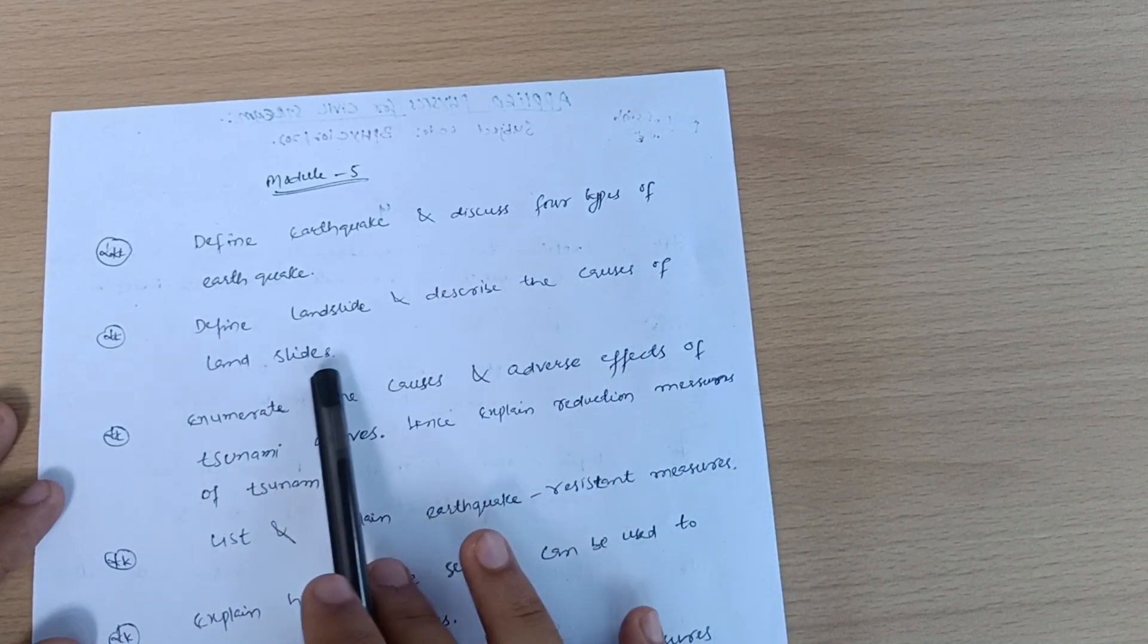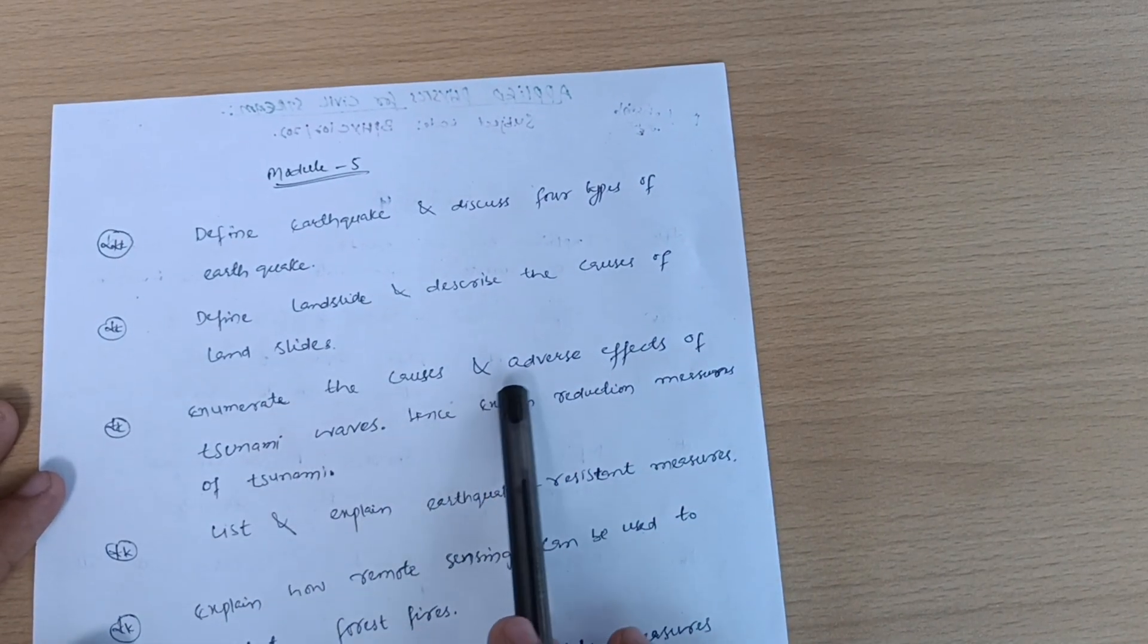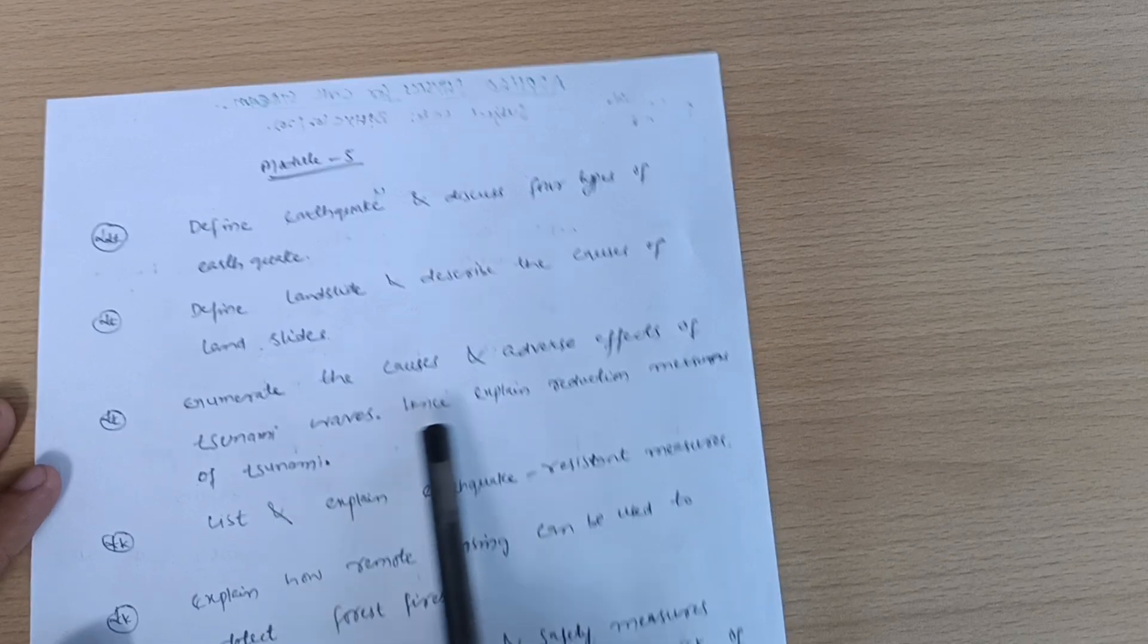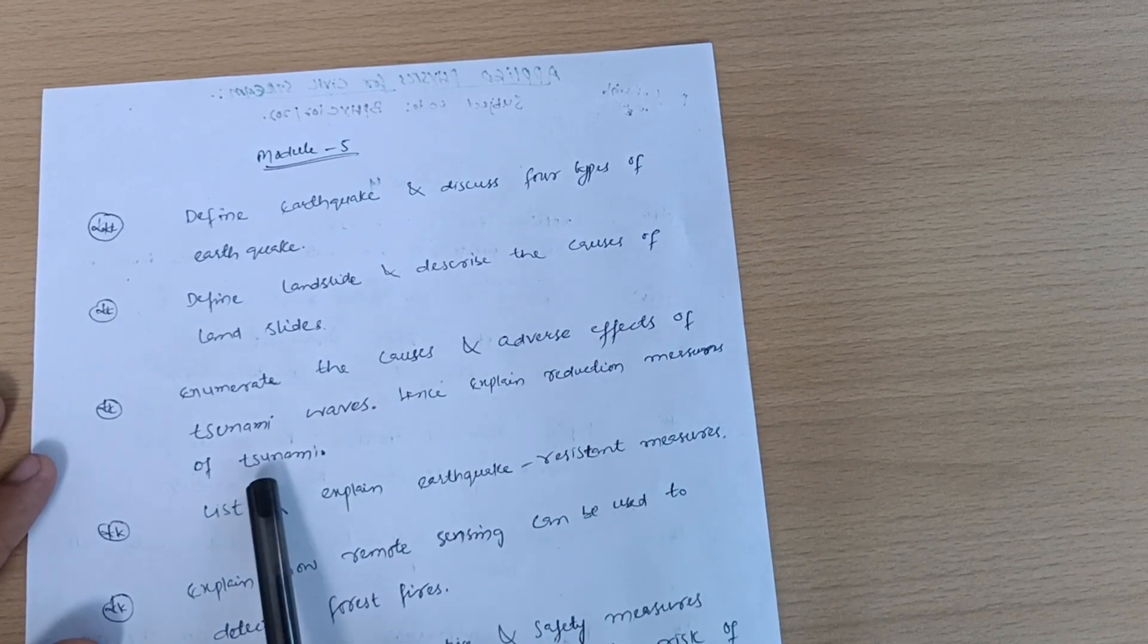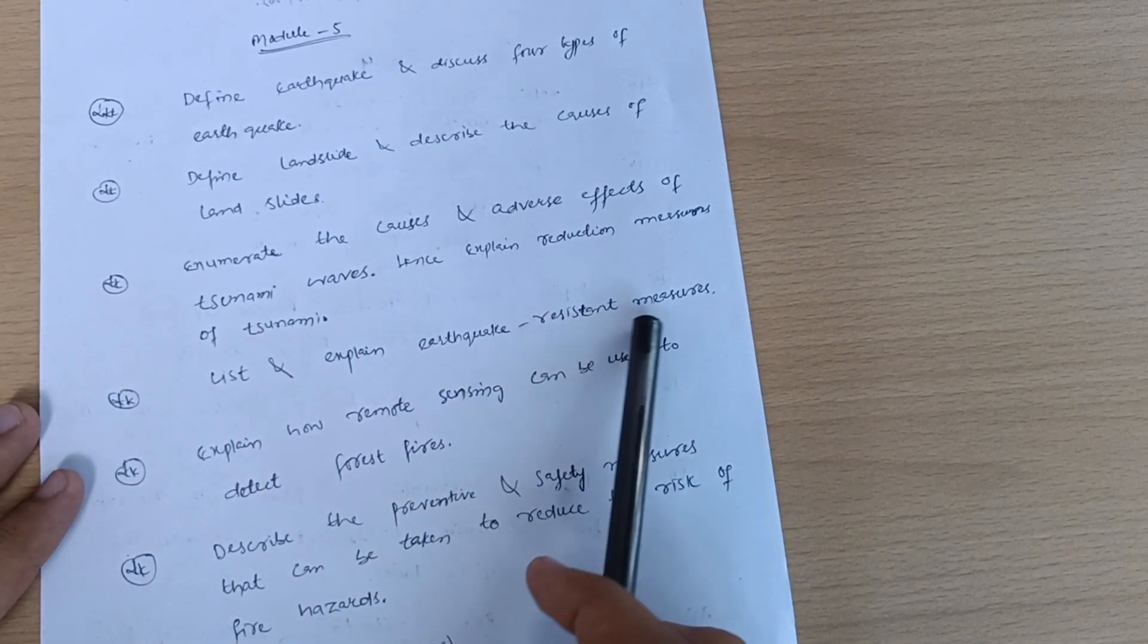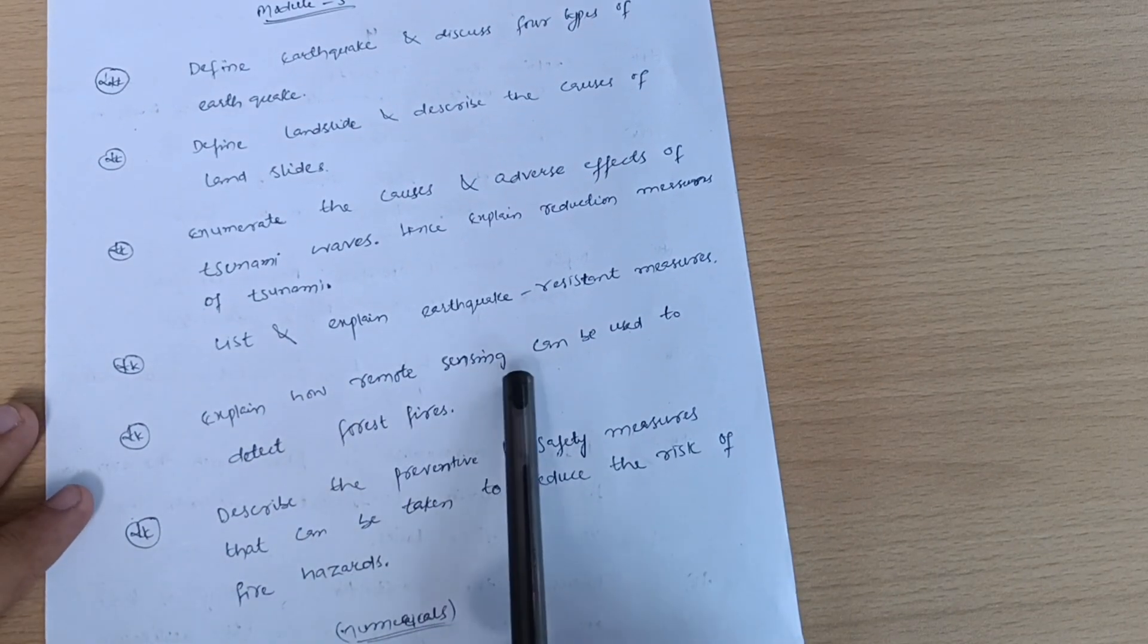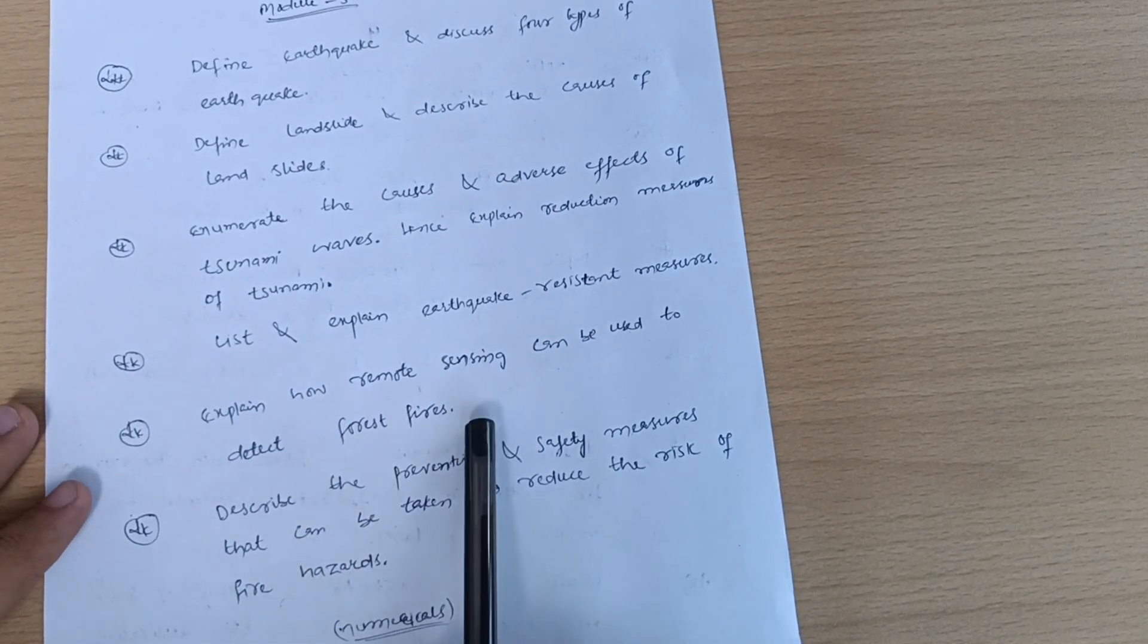Define landslide and describe the causes of landslides. Enumerate the causes and adverse effects of tsunami waves, hence explain the reduction measures of tsunami. Listen and explain earthquake resistant measures.